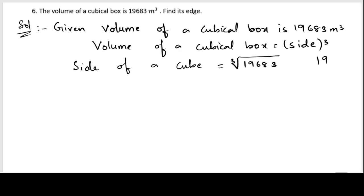Let us find the factors of 19683. If we add these digits: 1 plus 9 is 10, plus 6 is 16, plus 8 is 24, plus 3 is 27. Since the digit sum is 27, we can divide by 3.